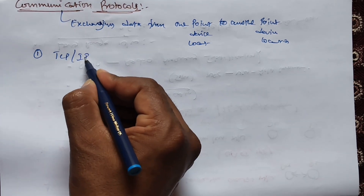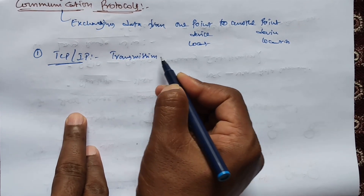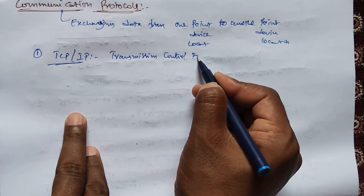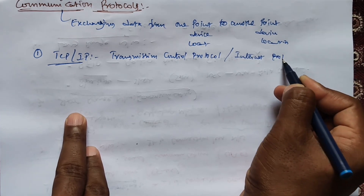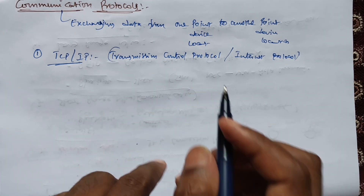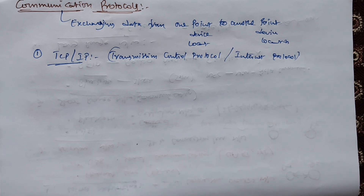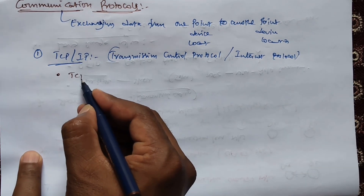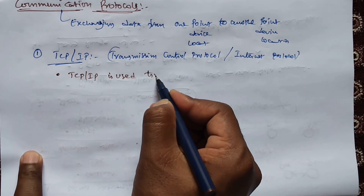The first is the TCP/IP protocol. TCP/IP stands for Transmission Control Protocol and Internet Protocol. The TCP protocol is used to transmit data from source to destination, and the Internet Protocol is used to identify the destination.